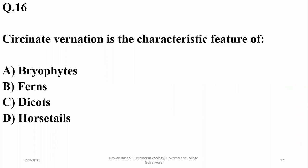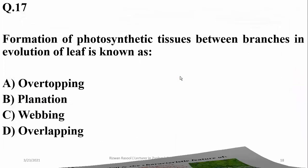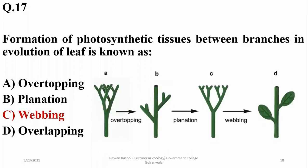Circinate vernation is a characteristic feature of ferns: the young leaves are in a coil form and slowly grow and uncoil to form larger leaves. This pattern is known as circinate vernation. Formation of photosynthetic tissue between branches in the evolution of a leaf is known as fusion or webbing.